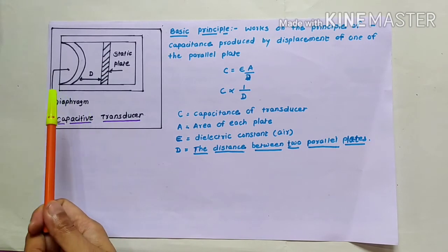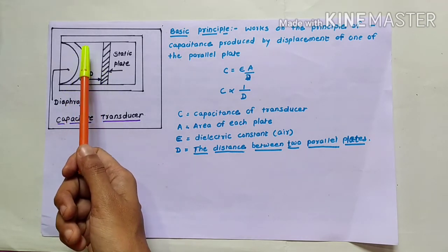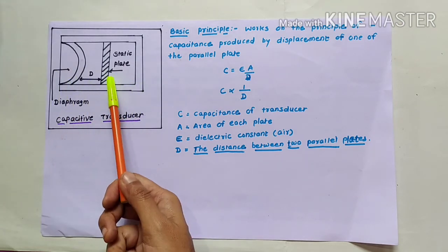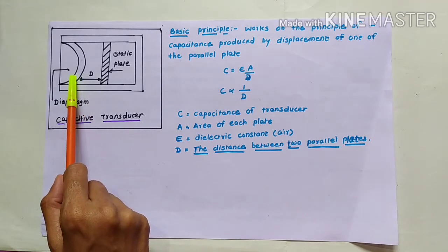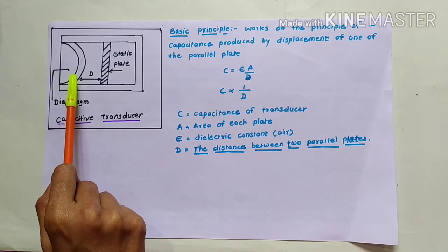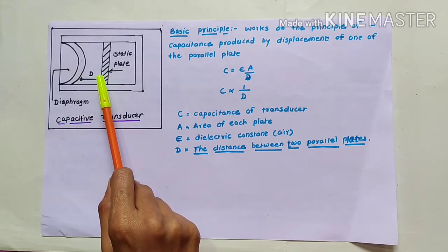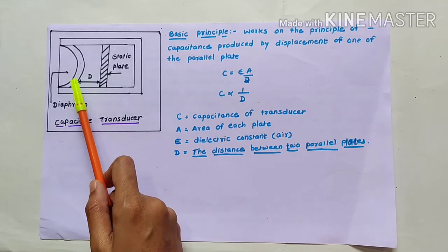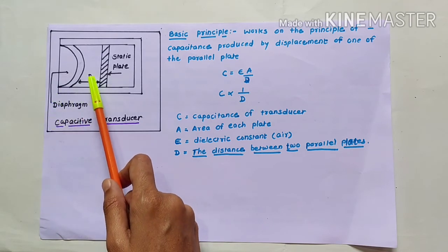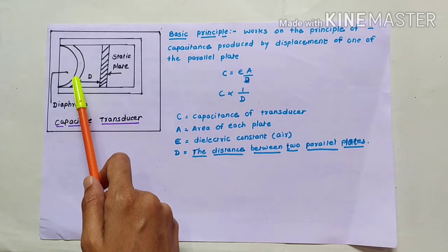Let us see the construction and principle of this capacitive transducer. It is constructed with the help of two parallel plates fixed in an insulating container. Out of these two plates, one plate is fixed — known as the static plate — and the other is a movable membrane known as the diaphragm. These two plates of an effective capacitor are separated by a dielectric, and air pressure which is to be measured is applied to the diaphragm.